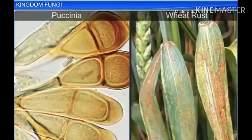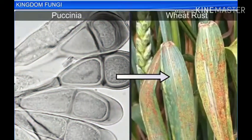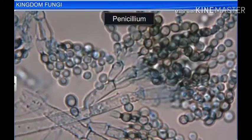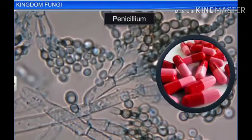While there are some fungi, like Puccinia, that can cause diseases like wheat rust in plants, there are also some, like Penicillium, that provide us with antibiotics.